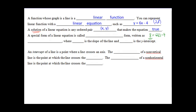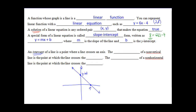A special form of a linear equation is called slope-intercept form. We write it as y equals mx plus b, where m is our slope and b is our y-intercept. An intercept of a line is a point where it crosses an axis. Where the line crosses the y-axis is the y-intercept; where it crosses the x-axis is the x-intercept. The y-intercept of a non-vertical line is the point at which it crosses the y-axis, and the x-intercept of a non-horizontal line is the point at which it crosses the x-axis.